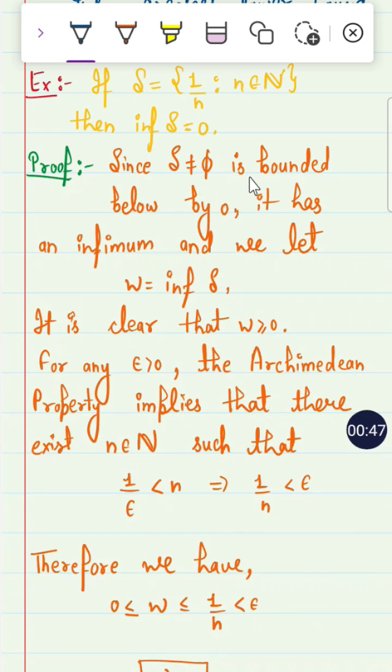Either it is bounded above or it is bounded below. It is bounded above by 1 and it is bounded below by 0. If you take limit N tending to infinity, it gives you 0. So it has an infimum and we let W equal infimum of S.